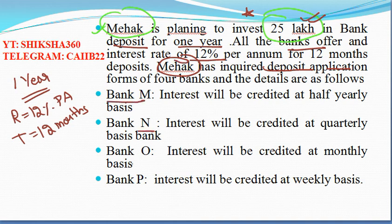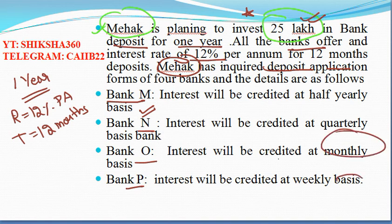The four banks are M, N, O, and P. Bank M says interest will be credited on a half-yearly basis. Bank N says interest will be credited on a quarterly basis. Bank O says interest will be credited on a monthly basis. Bank P says interest will be credited on a weekly basis.